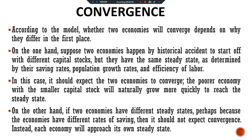This finding suggests that different countries have different steady states. However, if statistical techniques are used to control for determinants of the steady state — such as saving rates, population growth rates, and accumulation of human capital or education — then the data show convergence at a rate of 2% per year. In other words, the economies of the world exhibit conditional convergence: they appear to converge to their own steady states, which are determined by variables such as saving, population growth, and human capital.